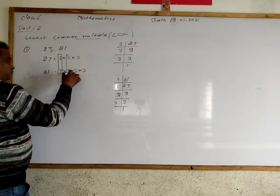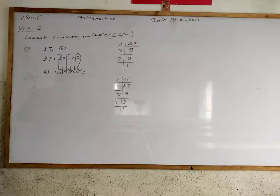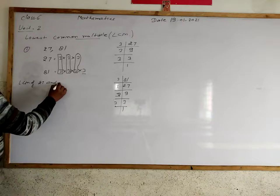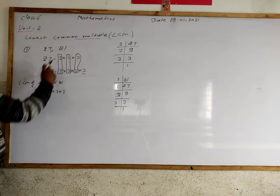Now factors for 81 is 3 multiply 3 multiply 3 multiply 3. Now find the common multiple and what is remaining here.